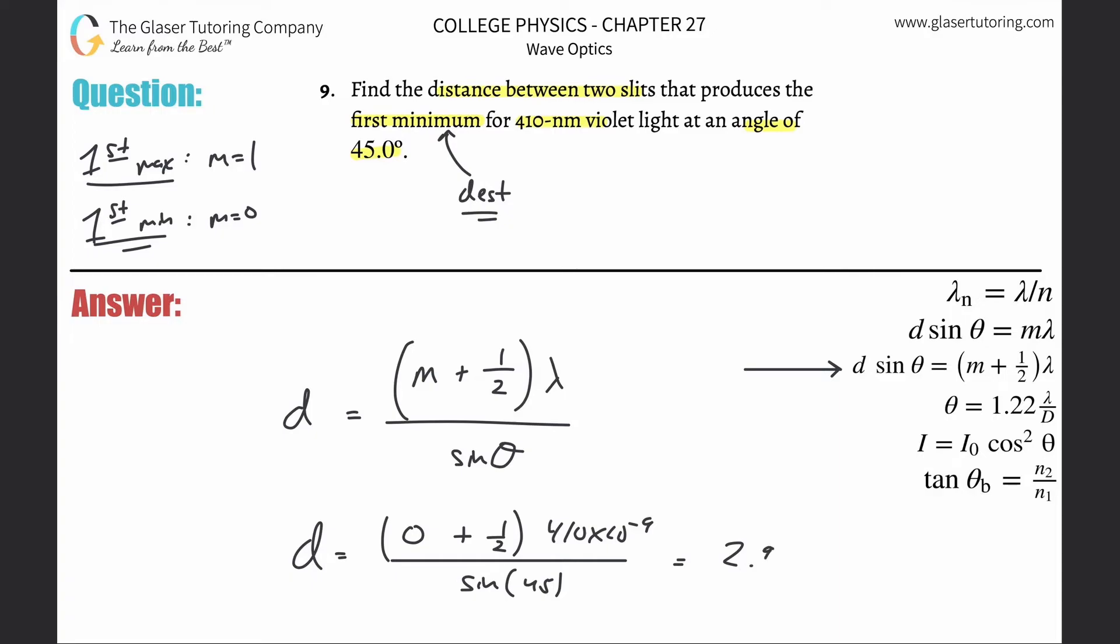2.90 in terms of forgetting to put the calculator in degree mode. Times then 10 to the minus seventh. And that's in terms of now meters.